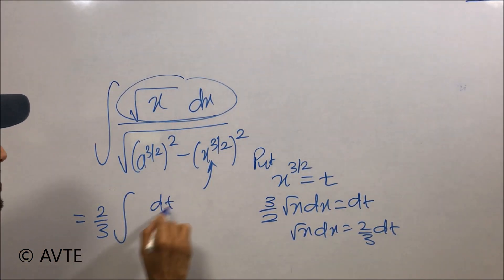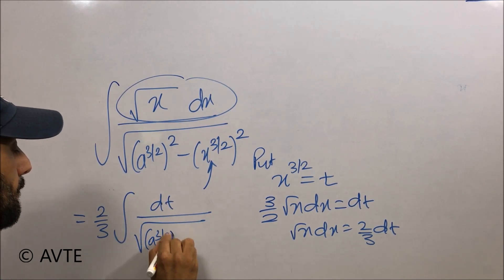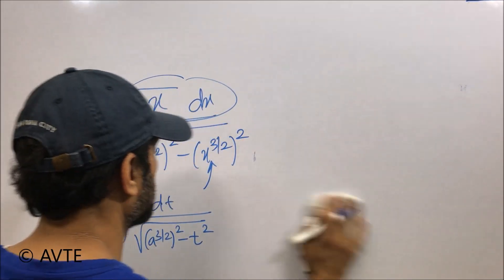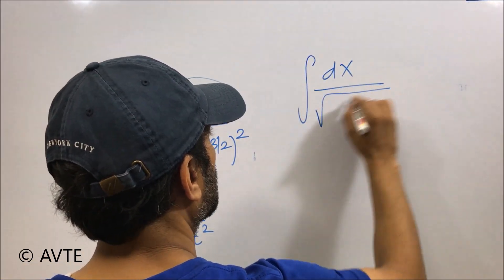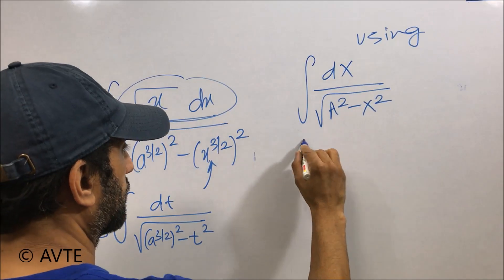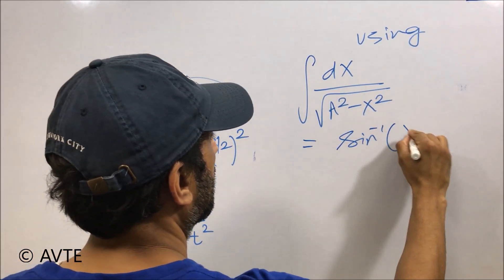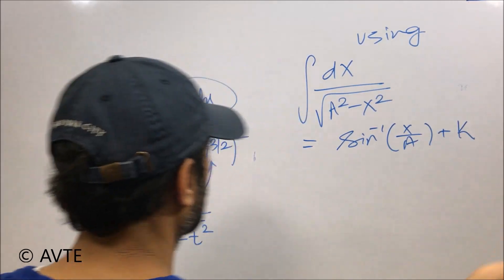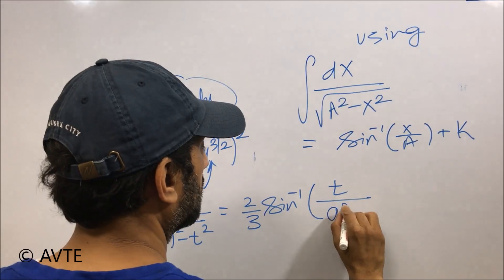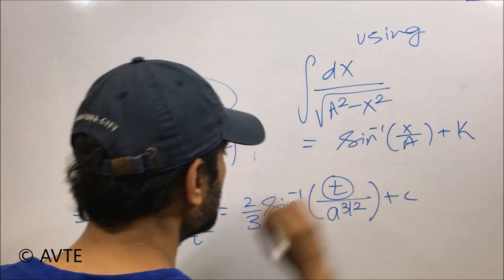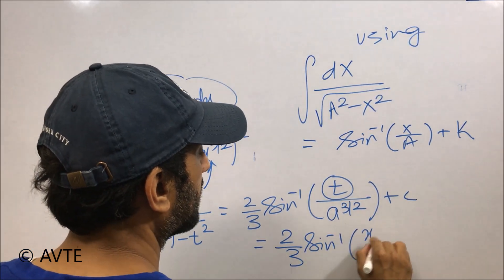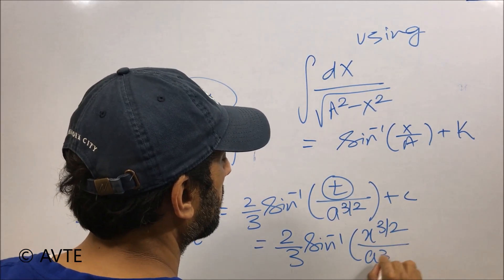The denominator turns to a square form, and we can apply the special integration formula here. Using the formula: integral of dx over root of a square minus x square equals sine inverse of x by a plus constant. The answer turns to 2 by 3 sine inverse of t upon a to the power 3 by 2. Since t is x to the power 3 by 2, the final answer is 2 by 3 sine inverse of x to the power 3 by 2 upon a to the power 3 by 2 plus c.